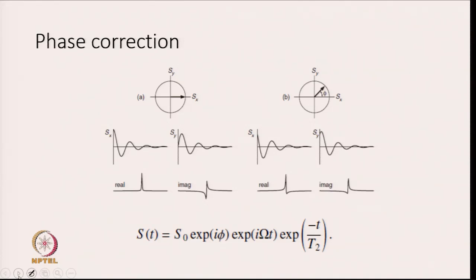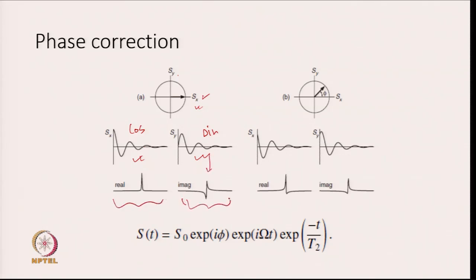What you can do is look at the signal either in the X direction or Y direction. If looking at X, the X signal will be cosine-modulated, whereas the Y signal will be sine-modulated. The signal at X versus time will look cosine-modulated, and the signal at Y versus time will be sine-modulated. When you do Fourier transformation, the cosine-modulated signal gives a real signal and the sine-modulated one gives an imaginary signal.